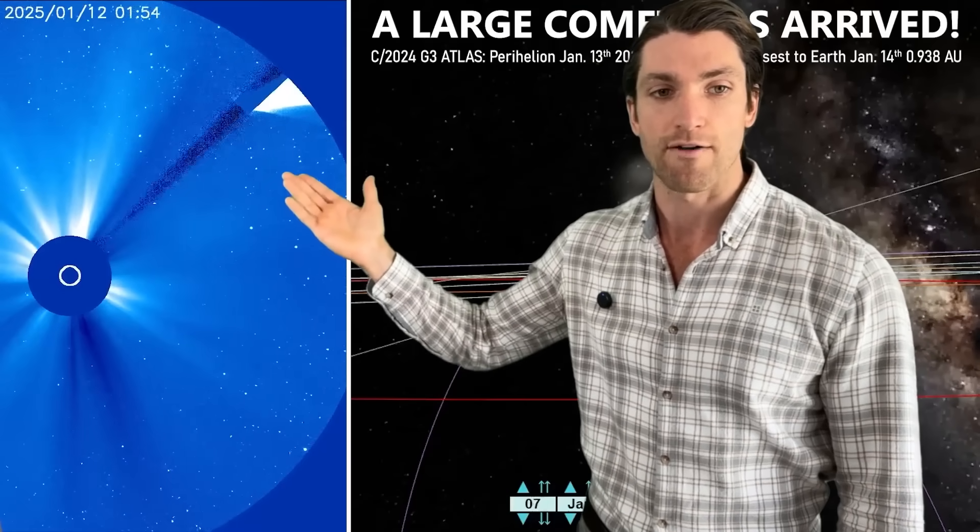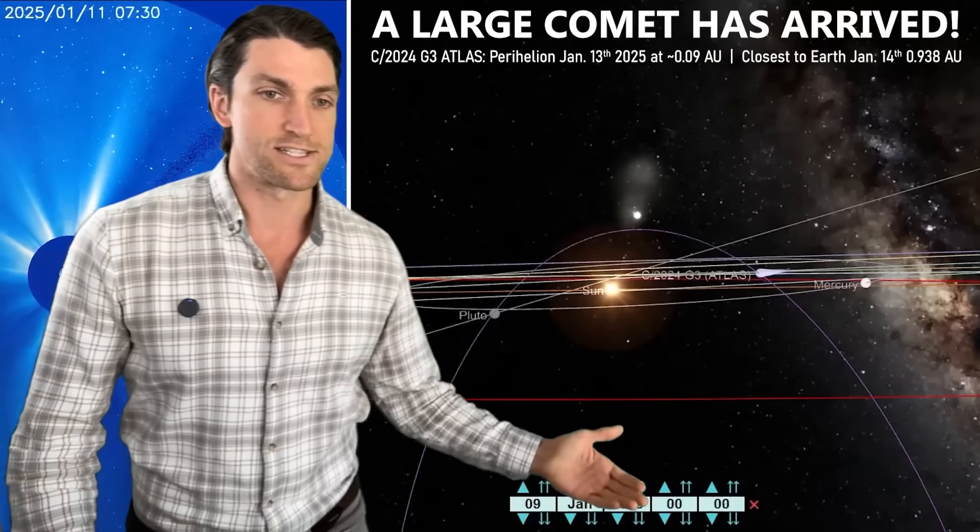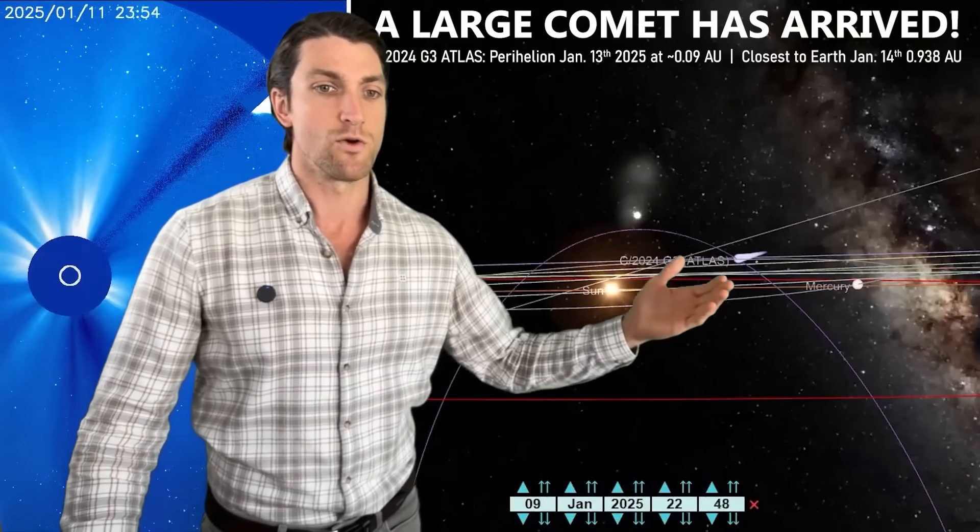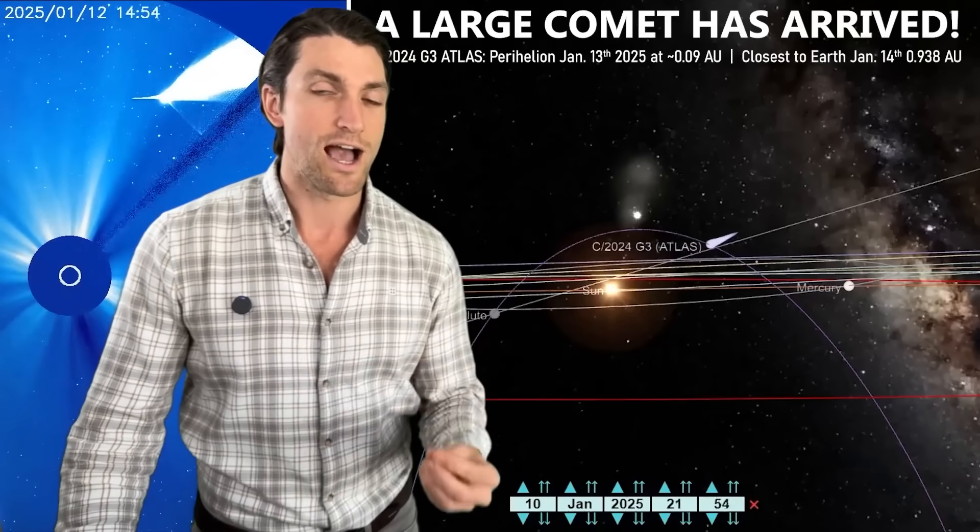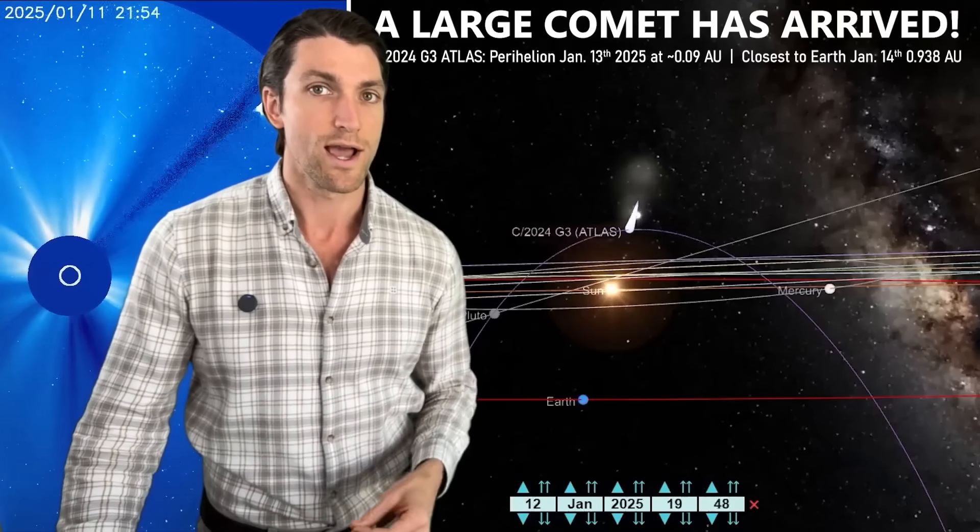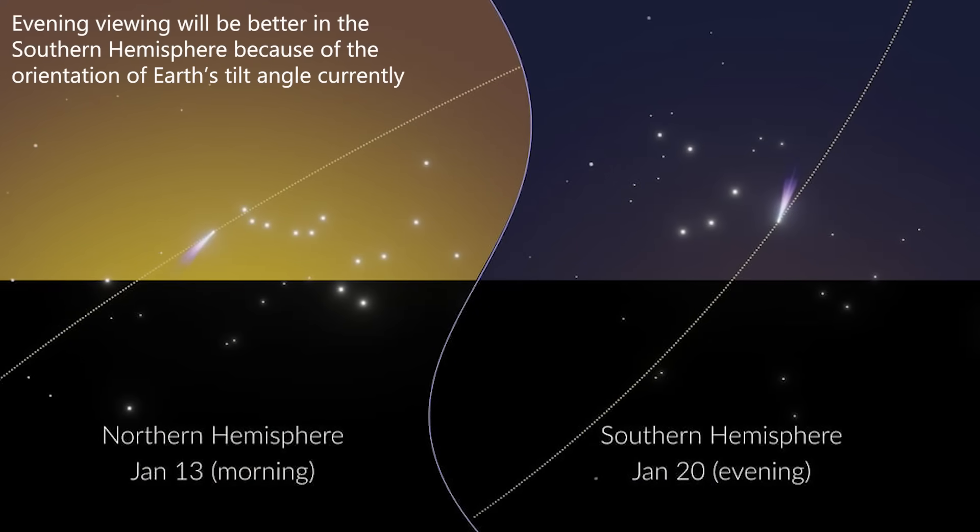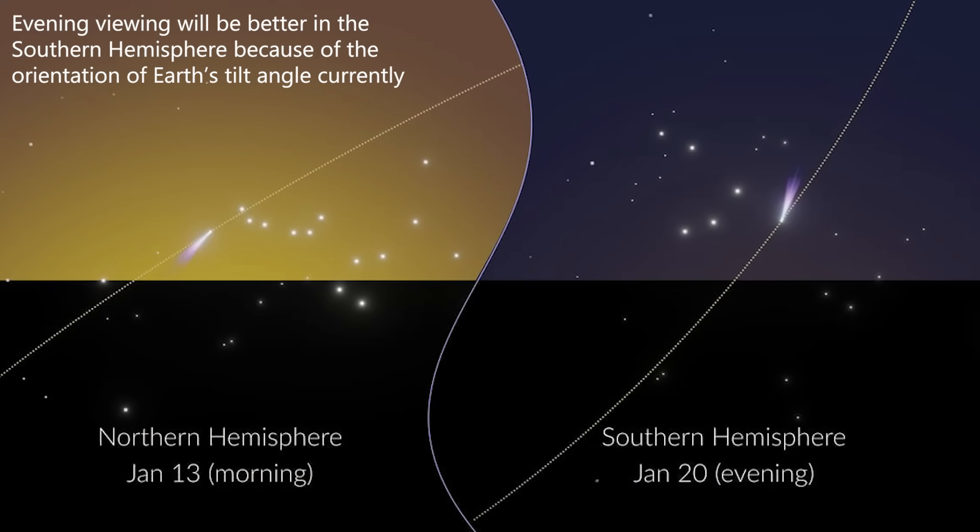You see that here in our Soho chronograph view, quite a big tail coming off of it. It's coming up from the south of the ecliptic plane, will swing north. On the 14th, it will have its closest approach to Earth, just under one astronomical unit away, and if it survives that trip around the sun, then we will have a very bright comet in the evening sky after the sun sets.